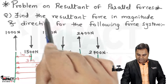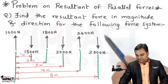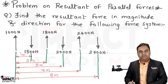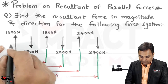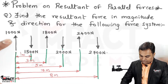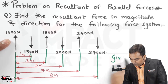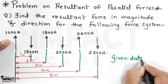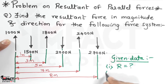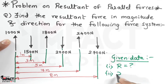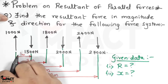1800 Newton acting upward, 2000 Newton acting downward, 2400 Newton acting upward, and lastly 2700 Newton acting downward. These are the forces given and their distances are given with respect to the first force, which is 1000 Newton. We have to find the magnitude of the resultant force and its location, given by x. Now into the solution part.